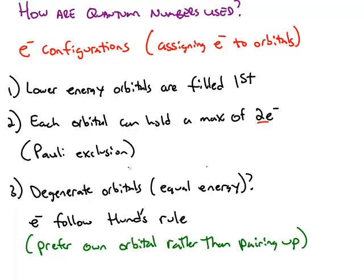The third principle is, if you have orbitals of equal energy, the electrons follow Hund's Rule, which means they prefer to be in their own orbital rather than pairing up with another electron.